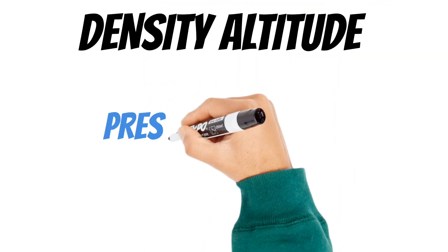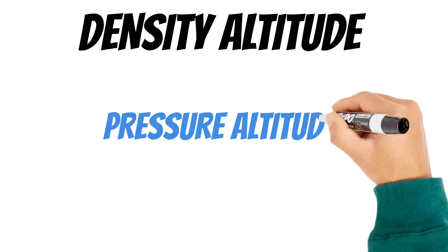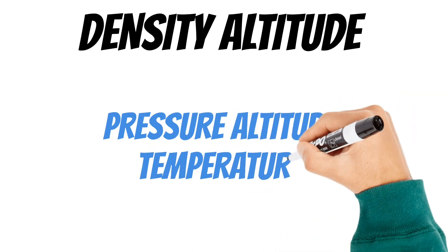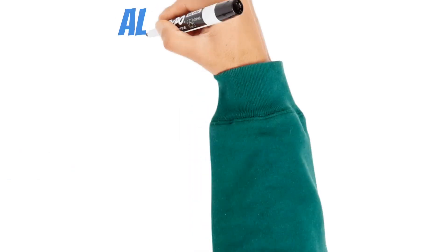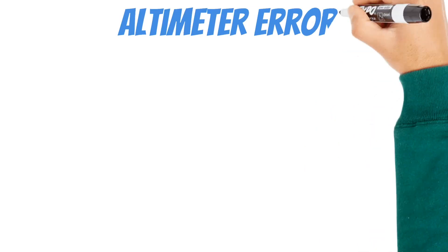So just so you're not confused, density altitude is based on pressure altitude and temperature. And this is how we calculate aircraft performance. That being said, indicated altitude is also affected by temperature. The other problem associated with hot temperatures is altimeter error.